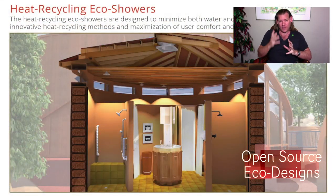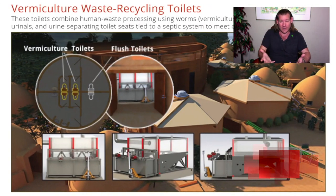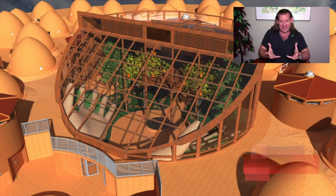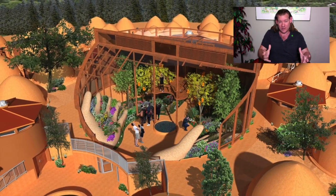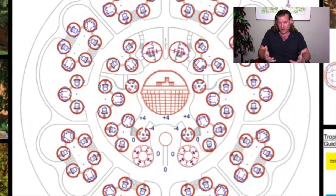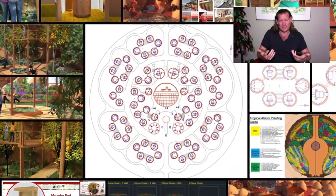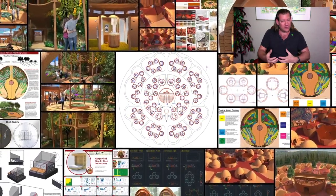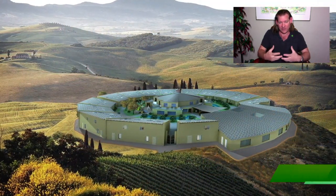We're also building a living prototype to show people what is possible when you bring people together with common vision and common values for the highest good of all life on this planet. What's possible when you bring together 50 people, grow that to 100, then 400, then 2,000 — working together in cooperation and collaboration for the highest good of each other and all people and life on this planet?